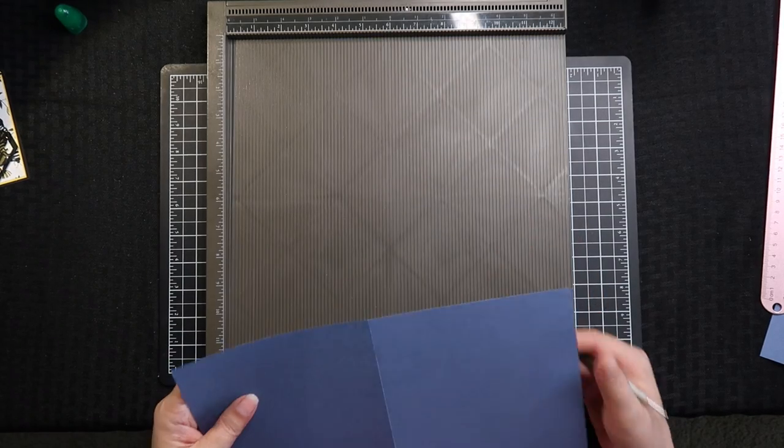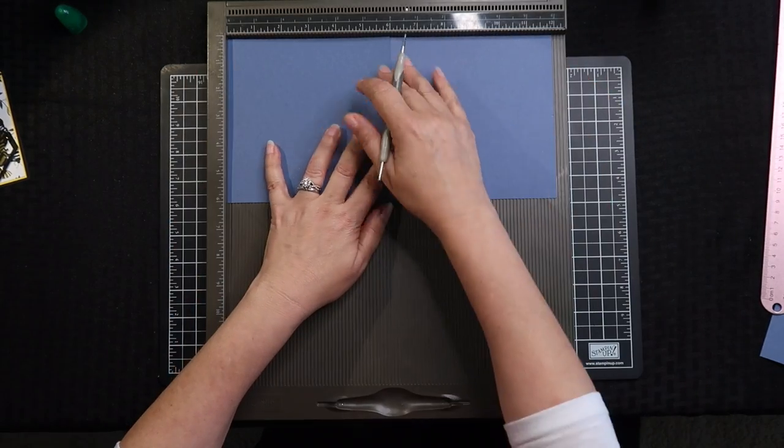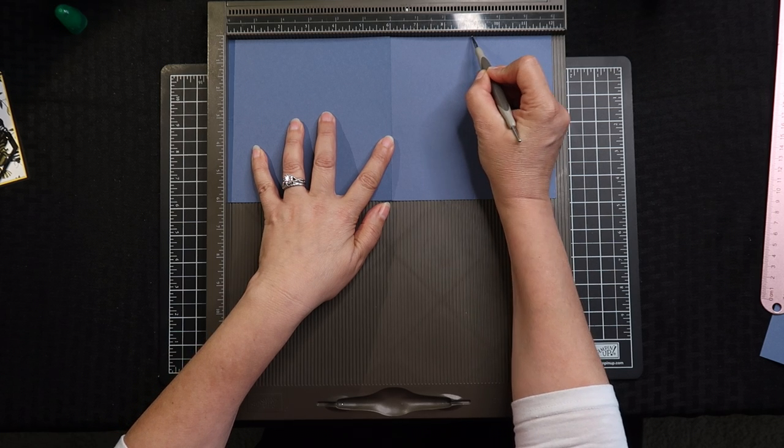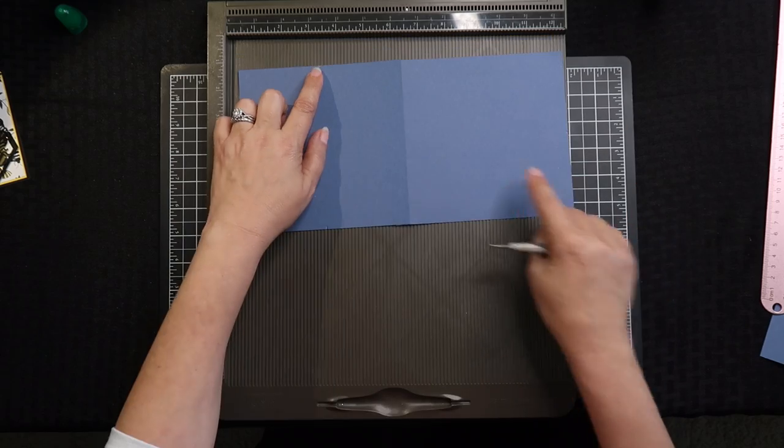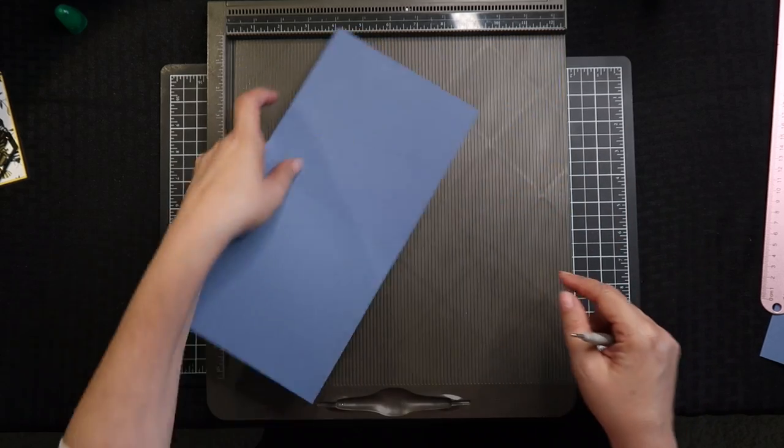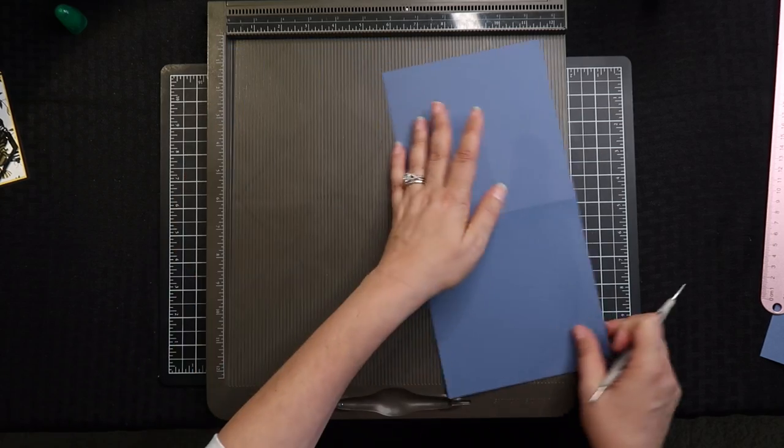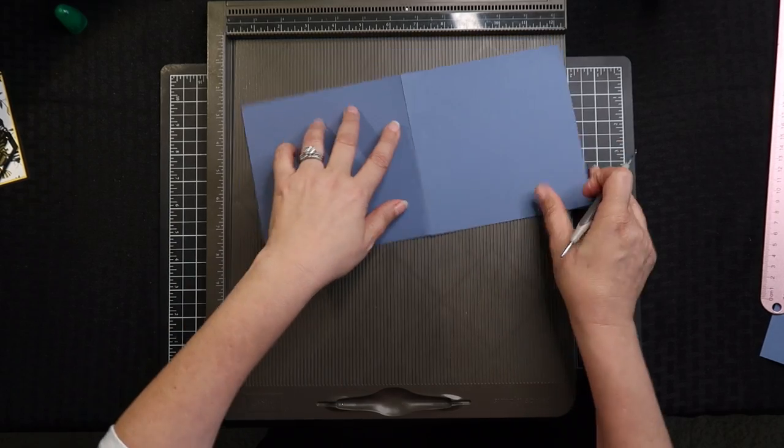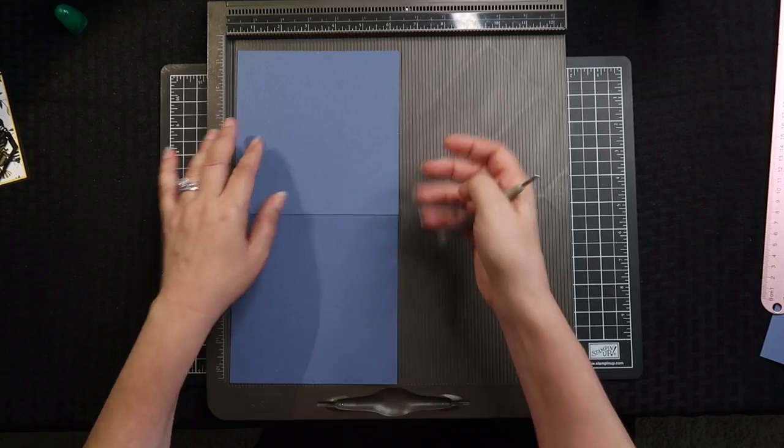Since we have this we're just going to go ahead and use it and what we're going to want to do is put it in the landscape position and then on the 3 inch and the 9 inch you're just going to put a tiny little score just like indenting the paper there. So you're going to do 3 inches at the end, 3 inches and 9 inches again and then 3 inches at this end.